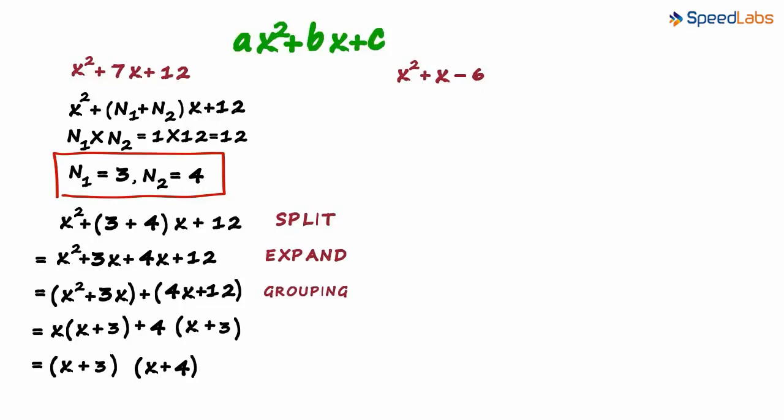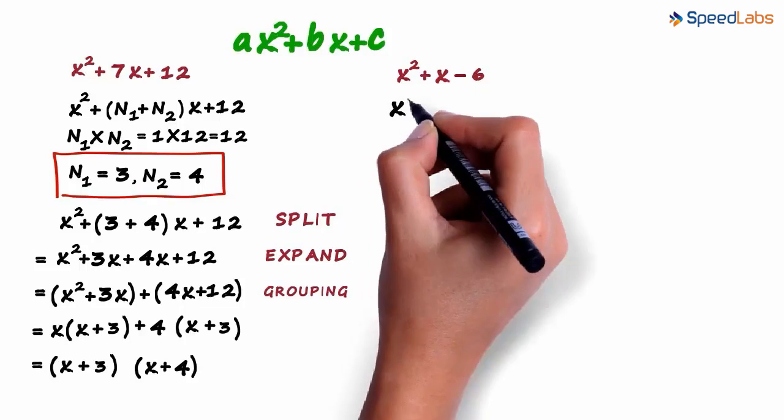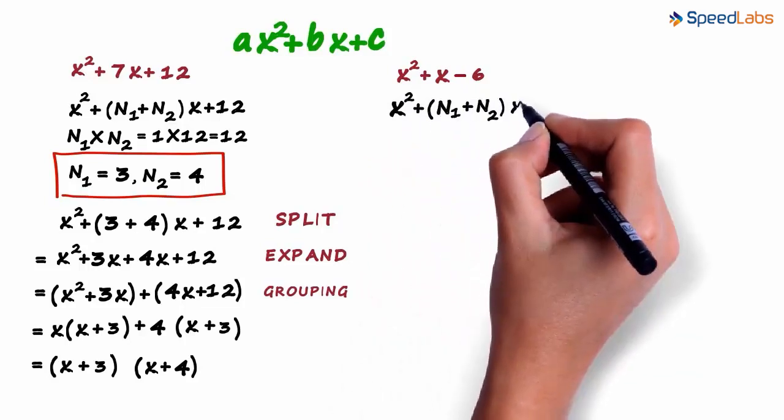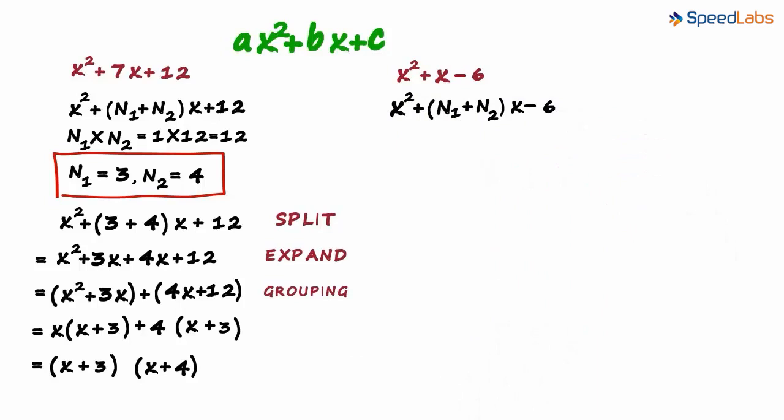This is where we left off in the last video. We need to factorize this polynomial. The first step is to write the coefficient of the middle term as a sum of two numbers. We write it as x squared plus (n1 plus n2)x minus 6. We basically wrote it as n1 plus n2.